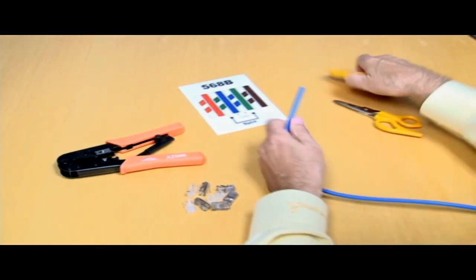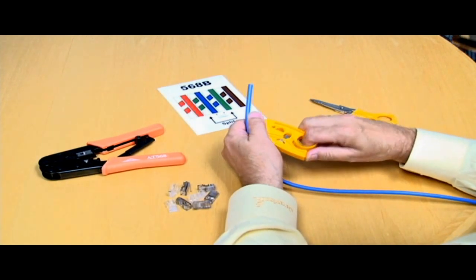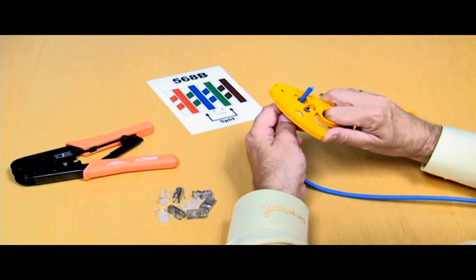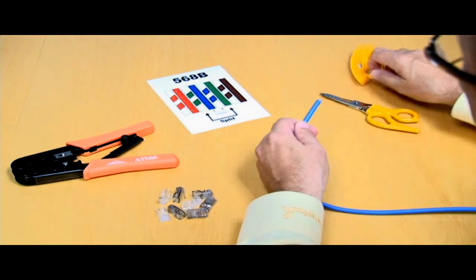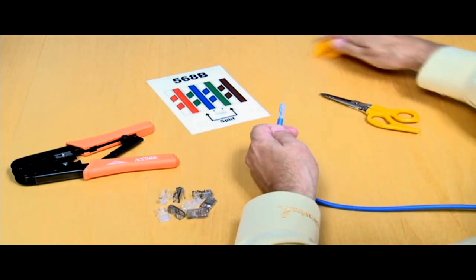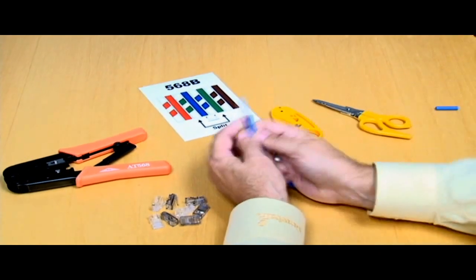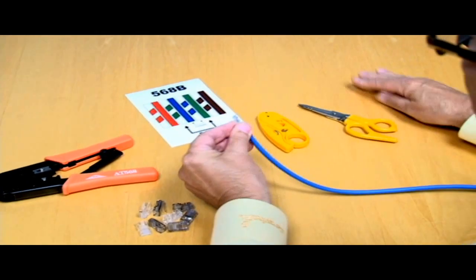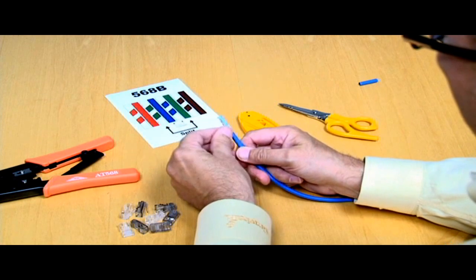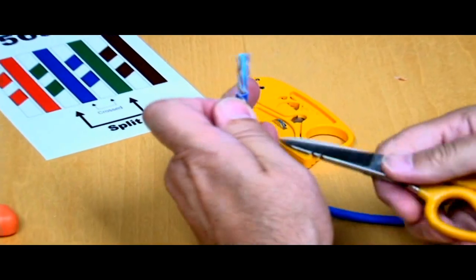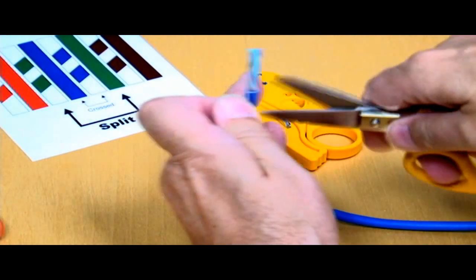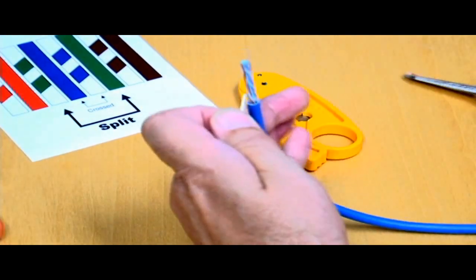The first thing we're going to do is take our stripping tool, and we're going to strip just about an inch or so, maybe an inch and a half of cable. We're going to strip the jacket back. You'll notice that inside here is a rip cord or a small string. We'll take our scissors and cut that little string off, because we don't need it.